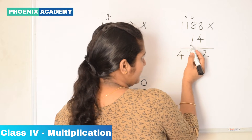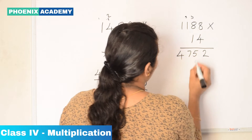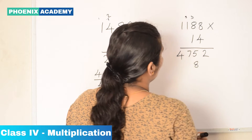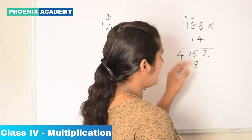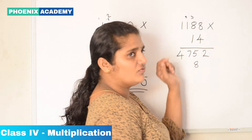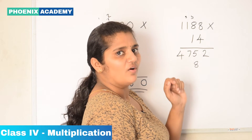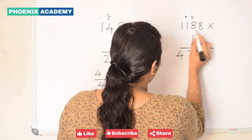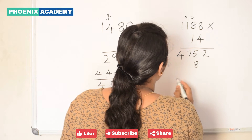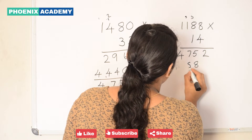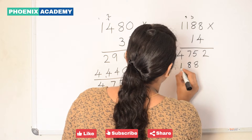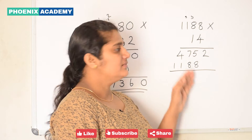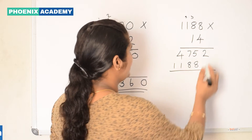Then we multiply the 10's digit, which is 1. Multiplying any number with 1 is always the same number, so we write 1,188 as the partial product. Then add these 2 partial products.